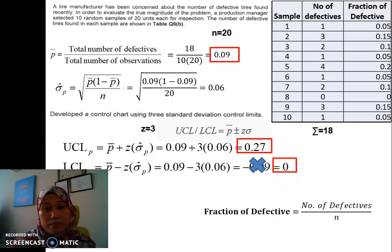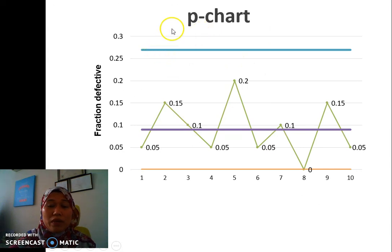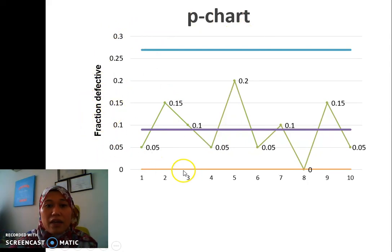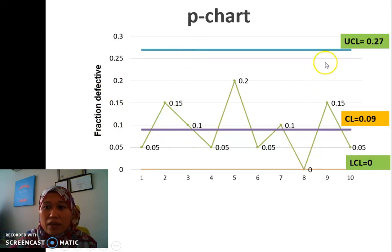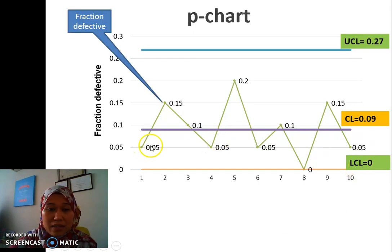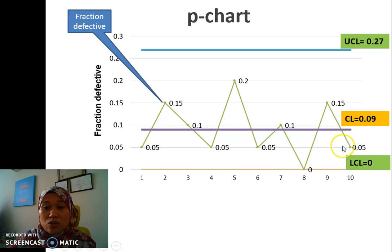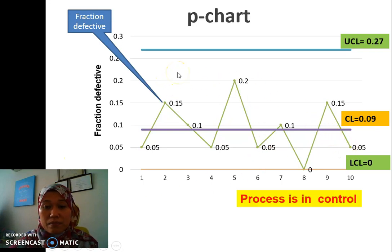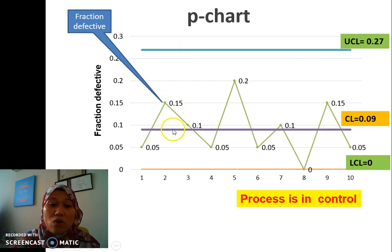Now we need to develop the control chart. When we plot the P chart, the y-axis is the fraction defective. We have the upper control limit of 0.27, the central line which is P-bar at 0.09, and the lower control limit at 0. We then plot the fraction defective values calculated in the table.